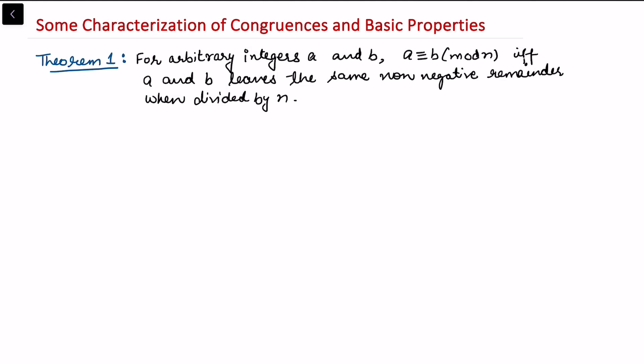In this video I'll be talking on some characterization of congruences and we'll also look at the basic properties of congruences. Let's look at the first theorem that says: for arbitrary integers a and b, a is congruent to b modulo n if and only if a and b leave the same non-negative remainder when divided by n.